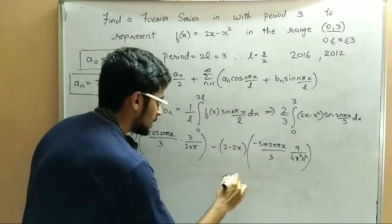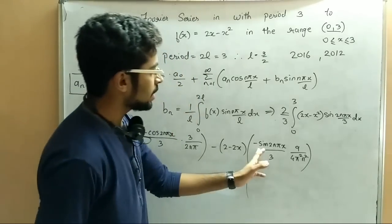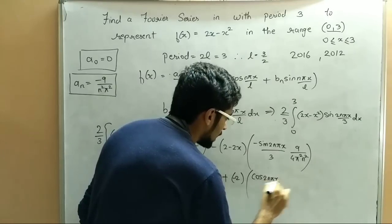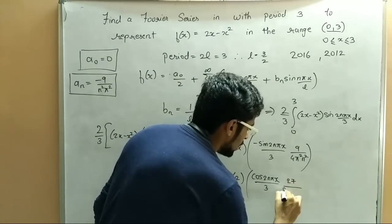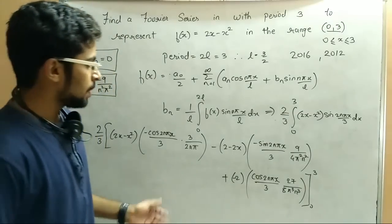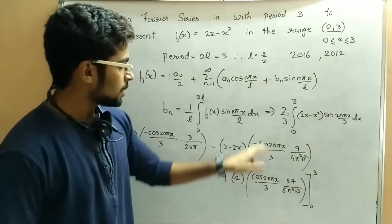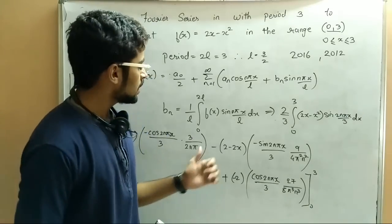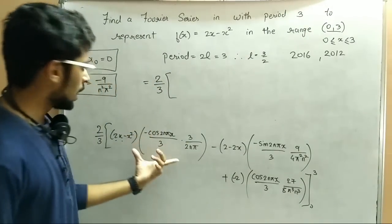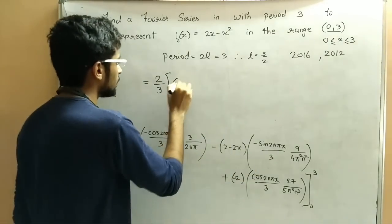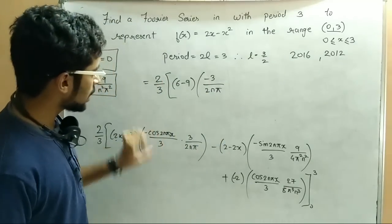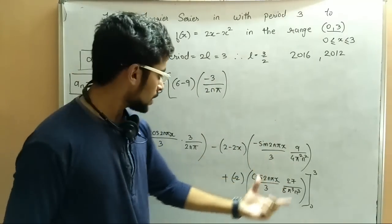Continuing: plus minus 2, and applying integration again gives cos(2nπx/3) with coefficient 27/(8π³n³), with limits 0 to 3. Now applying the limits: the sine parts will again be 0 when we apply 3 and 0. Applying upper limit x=3: 2 into 3 = 6 minus 9, and the next part minus 3/(2nπ) times cos(2nπ) becomes minus 1, giving minus 3/(2nπ). The cosine part gives 1, and we get 27/(8n³π³). Then applying lower limit x=0 makes those parts 0.